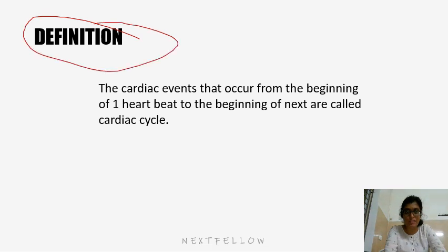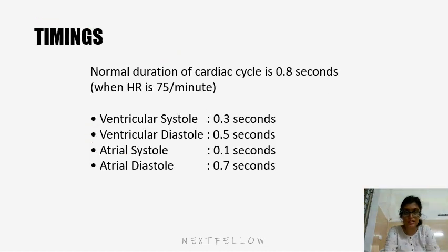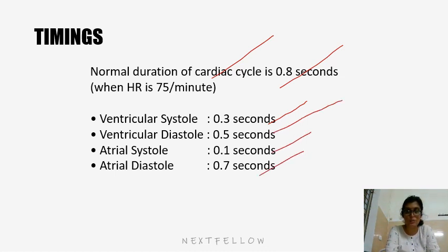Coming to the definition of the cardiac cycle: the cardiac events that occur from the beginning of one heartbeat to the beginning of the next heartbeat is called the cardiac cycle. Normal duration is 0.8 seconds when the heart rate is 75 beats per minute. Ventricular systole is 0.3 seconds, ventricular diastole is 0.5 seconds, atrial systole is 0.1 seconds, and atrial diastole is 0.7 seconds.